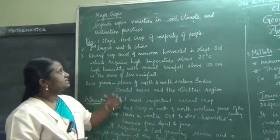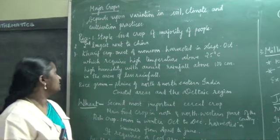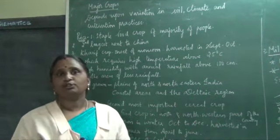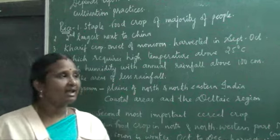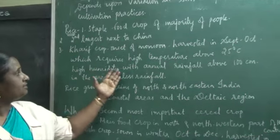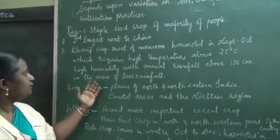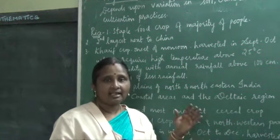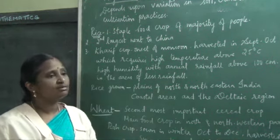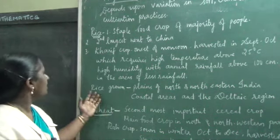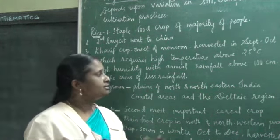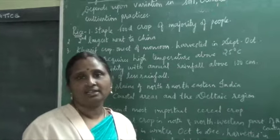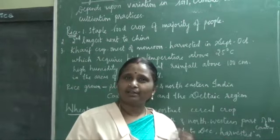Rice requires a high temperature above 25 degrees Celsius and high humidity, with annual rainfall above 100 centimetres. Humidity is the amount of water vapour in the atmosphere. Even in areas with less rainfall, it should be almost above 100 centimetres. Rice is grown in the plains of north and northeastern India and in coastal and deltaic regions. In the southern part of India, the consumption of rice is more compared to the northern side.